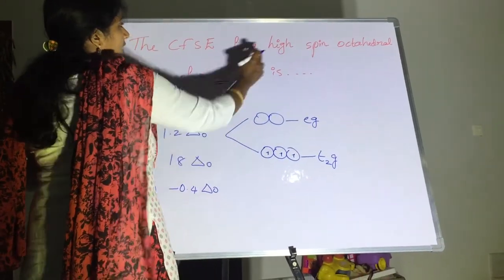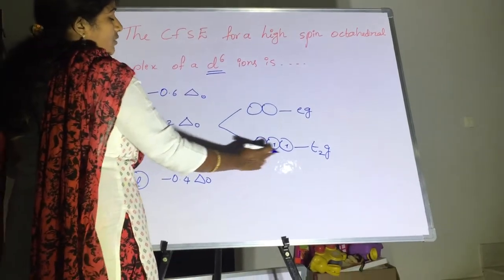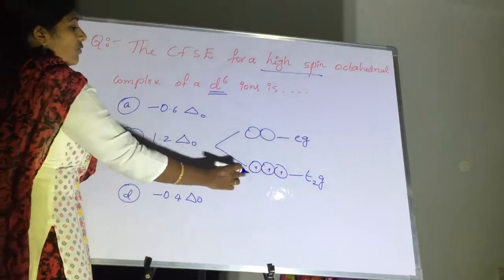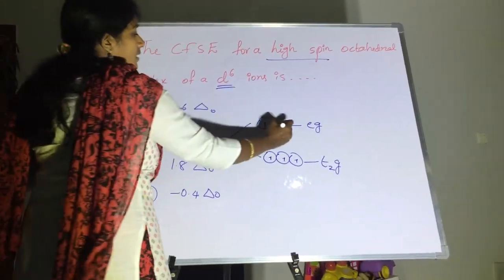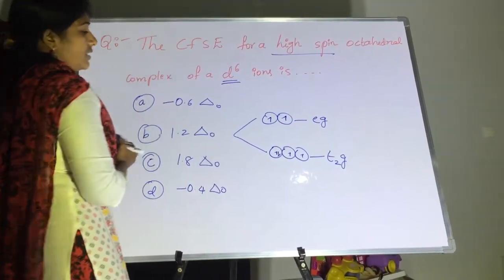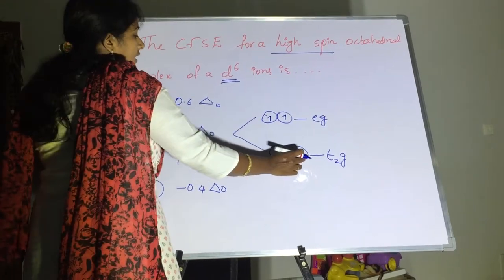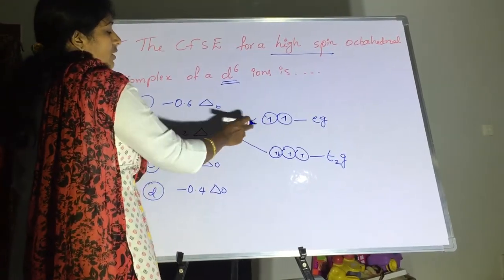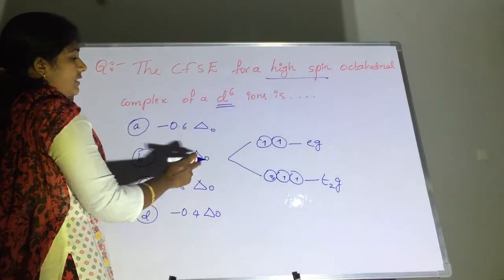So when we are taking low spin complex, four electrons enters into this t2g only. But in case of high spin complex, four electrons enters into this eg orbital, five, now six electrons enters into this t2g orbital. So after getting one electron in each orbital, then only pairing is possible in high spin complex.